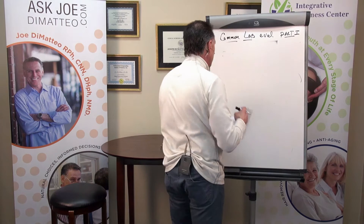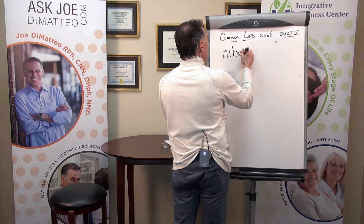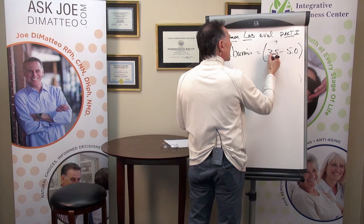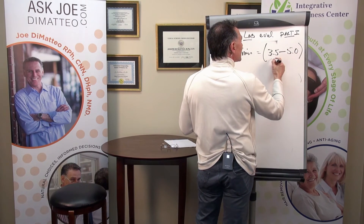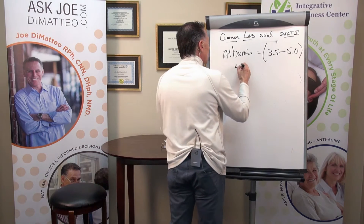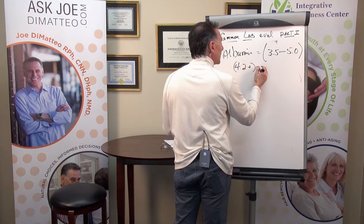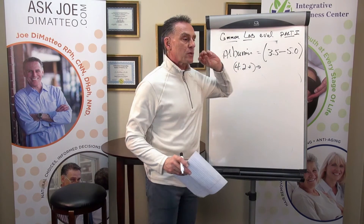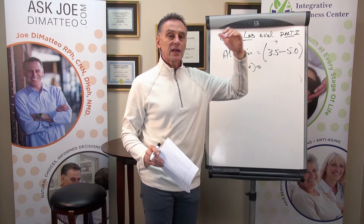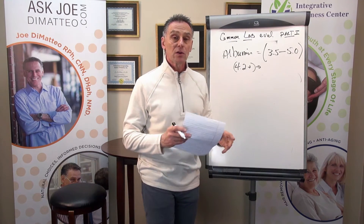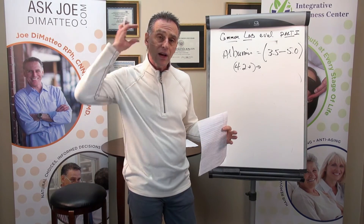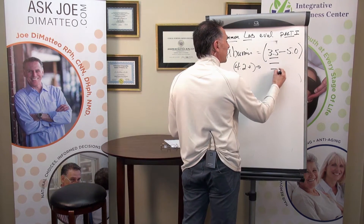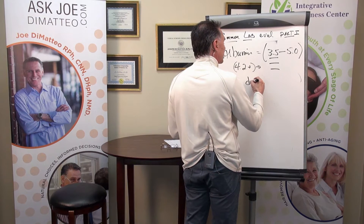We always look at serum albumin levels when you get blood work done. Typically the laboratory range for distress or disease is 3.5 to 5 — a hugely wide range. We want you somewhere in the 4.2 and above category, not over five — so 4.1, 4.2, 4.3, 4.4. This shows that we have good, adequate protein functioning. Protein is getting its job done — we're breaking it down, converting it. Albumin is a very significant marker of health.